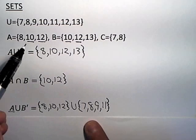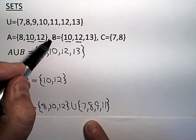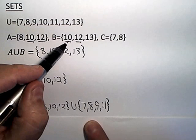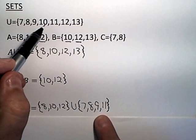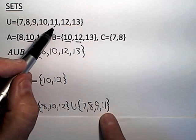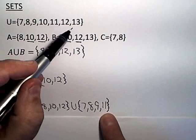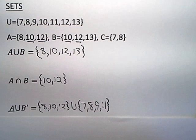So, B complement and again, 7 is in there because it's not in B. 8 is in there because it's not in B, 9 is in there because it's not in B, 10 is not in there because it is in B, 11 is not so it goes in, 12 and 13 are both in there. So be very careful.